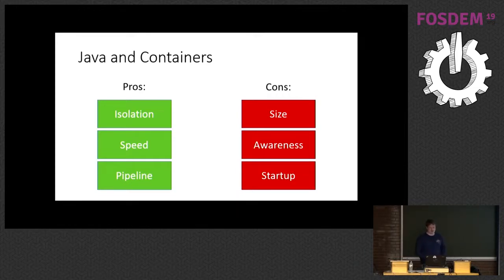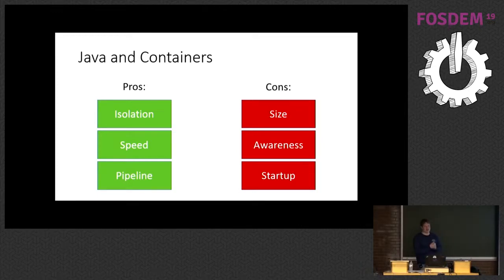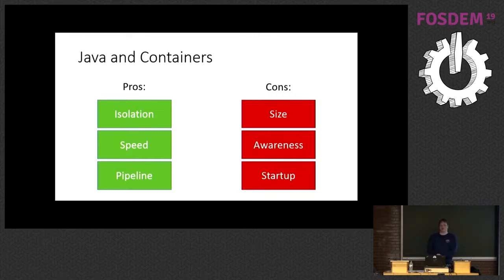Now this all sounds great, if a little complicated to set up sometimes. So what are the downsides when you combine Java and containers? One of the downsides is size. The JDK is several hundred megabytes in size — specifically 292 megabytes. If you've ever had to download it over a slow internet connection, you'll know it's not small. So sticking it into something that's supposed to be tiny and lightweight is a bit of a mismatch.